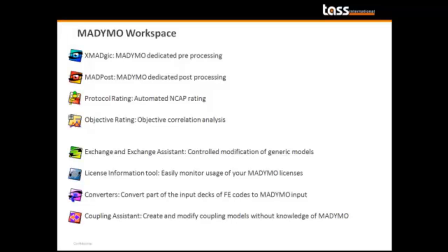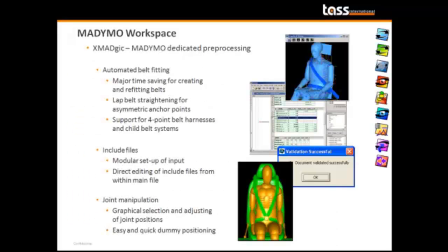The Madimo Workspace suite contains a set of pre- and post-processing tools that allow efficient analysis of occupant safety. The dedicated pre-processor provides full control over your input deck and advanced features like automatic belt fitting for traditional 2- and 3-point belts, as well as 4- and 5-point belt harnesses. A modular setup is facilitated by Madimo's tree structure and the use of include files that allow easy exchange of components.